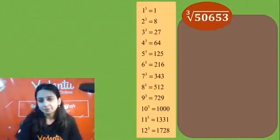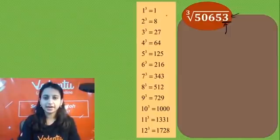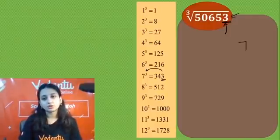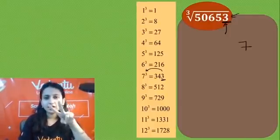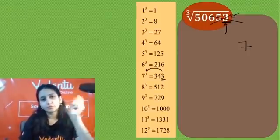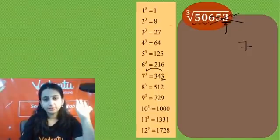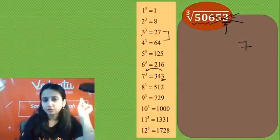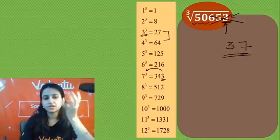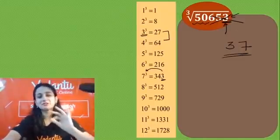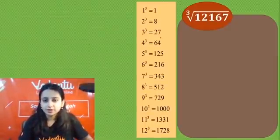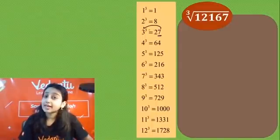Let's see one more question. Ones place pe kya hai? In the second step, discard the last three digits. What remains is 50. Now, 50 lies between 27 and 64. Take the smaller one — that's 3. So 37 is the answer! Kuch bhi nahi hai — halwa! Simple.